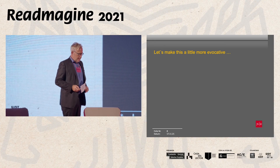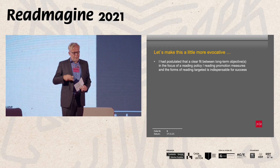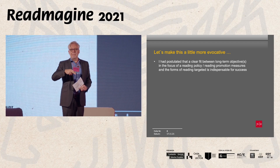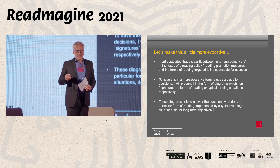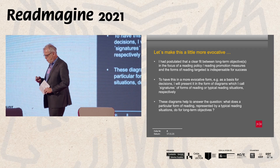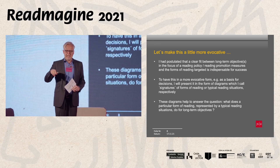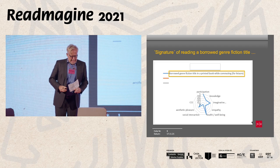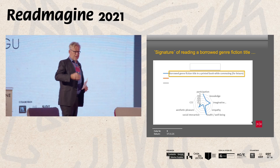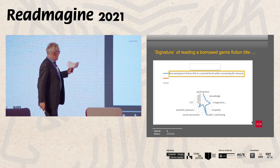Now I will present the harvest of all that, and I want to make it more evocative by taking three example reading situations — the yellow ones — and giving them graphical signatures. These signature diagrams make it easier for someone planning a reading promotion policy or measure to see how different reading situations can be, and to decide in which direction this measure or policy is directed. Here is the signature of the prototypical reading situation: reading a borrowed genre fiction title.